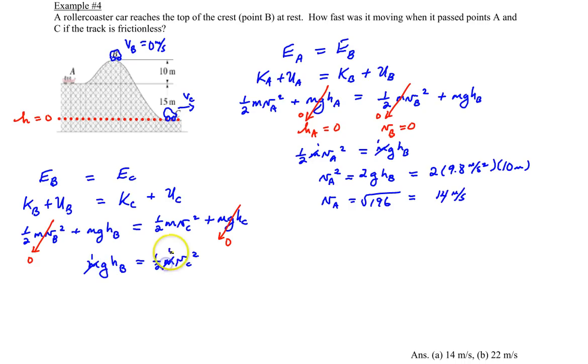And the velocity at C is equal to the root of 2 times g times the height of B. Now the height at B is not what I said earlier as 10 meters because that was 10 meters where I set my reference frame here. So I'm going to be 2 times 9.8 meters per second squared. But my height of B now is this whole distance which is 25 meters.